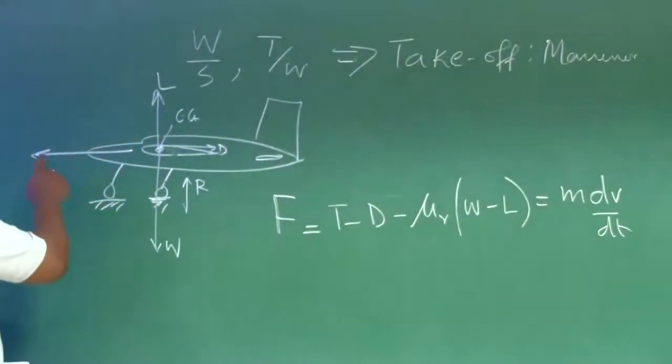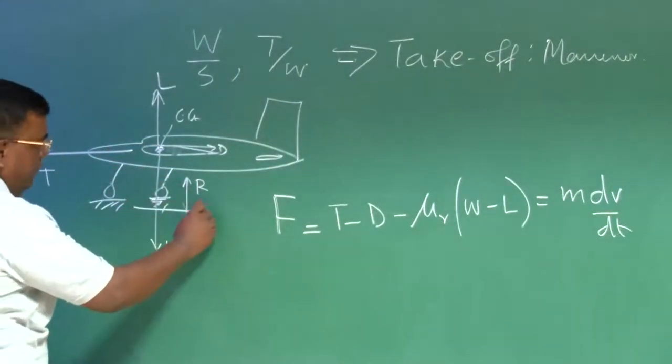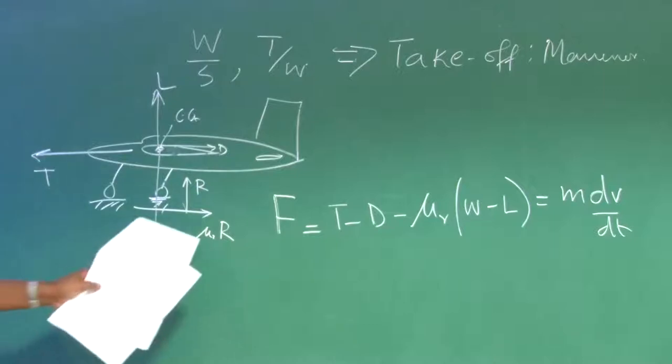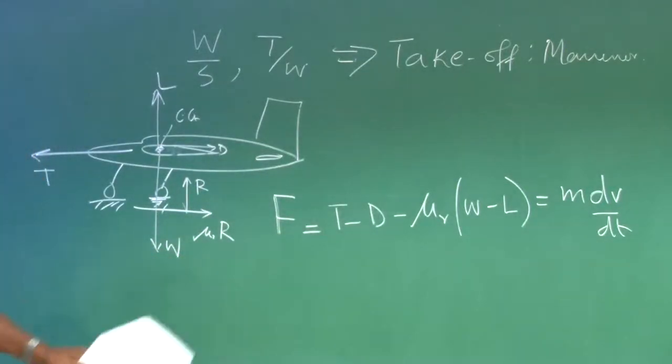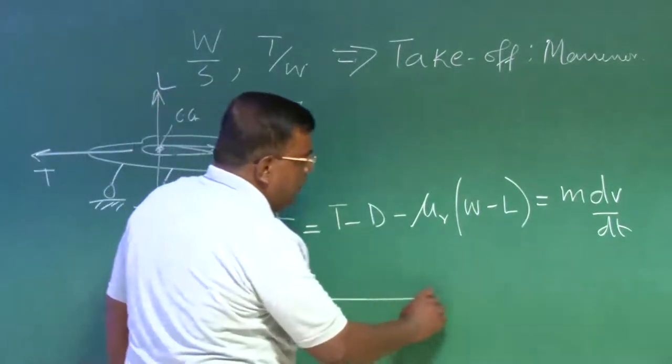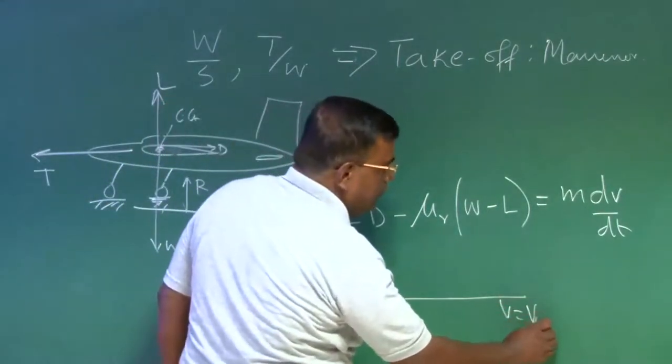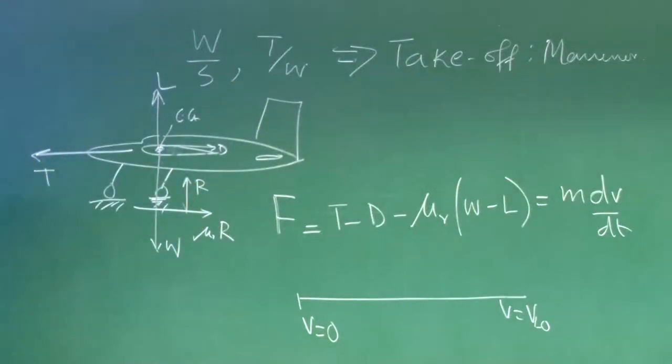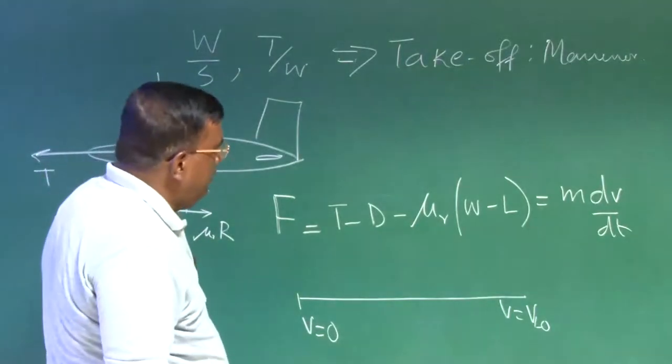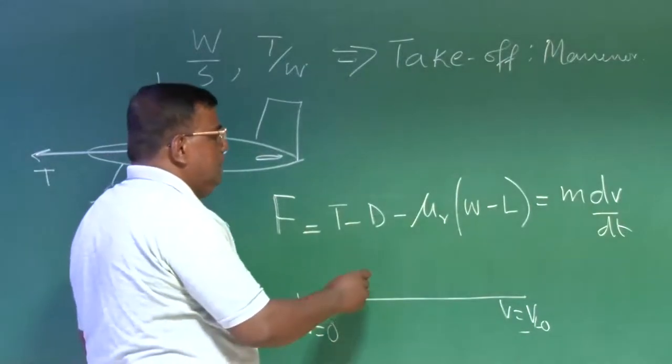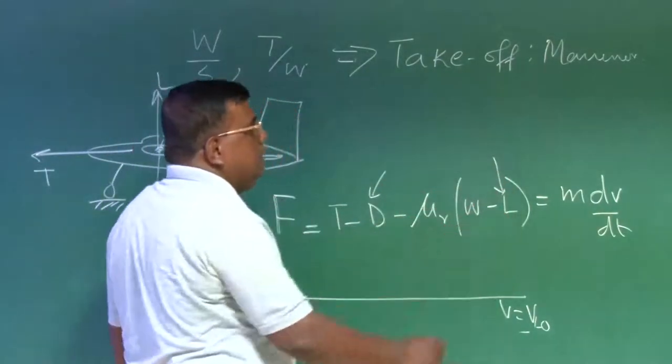When I write lift and drag, assume there is a moment, but that moment is balanced. If I have this sort of a diagram, then I can easily write F equal to T minus D minus mu R into W minus L and that equal to m dV by dT. What is this F? The net force acting that is thrust minus drag, then there will be frictional force mu R into R and R is nothing but L minus W. Now imagine, when you are going for takeoff, you are starting some V equal to 0 to V equal to V lift off at the speed at which you will actually turn the aircraft, increase the angle of attack and go for a climb.